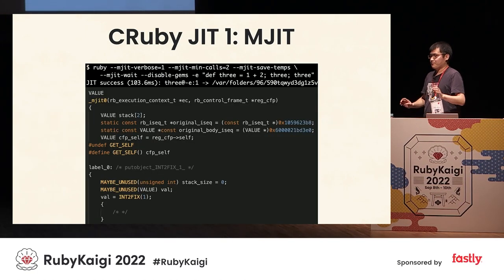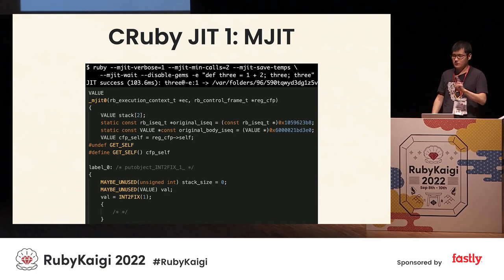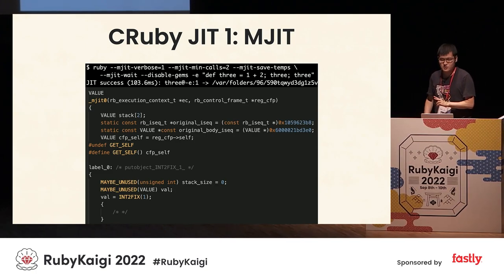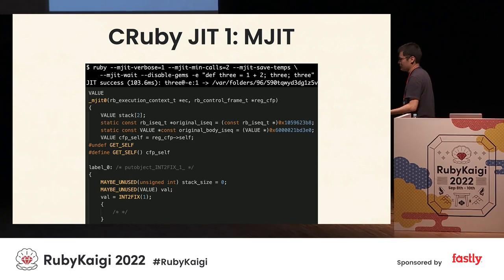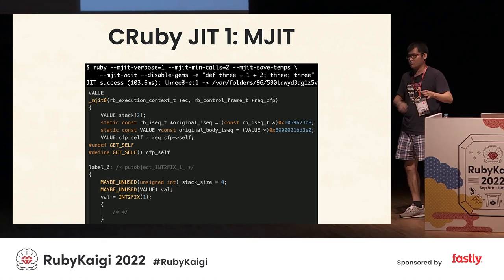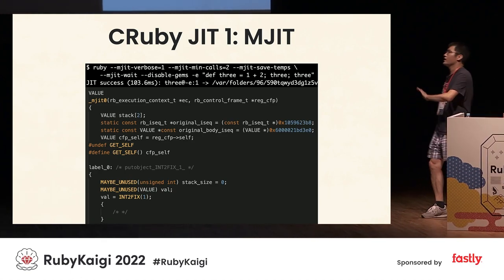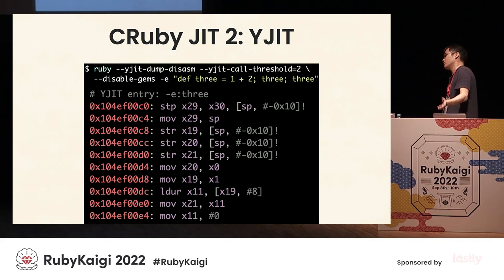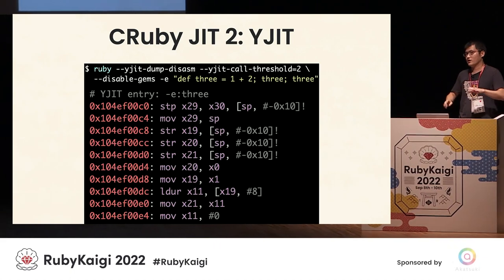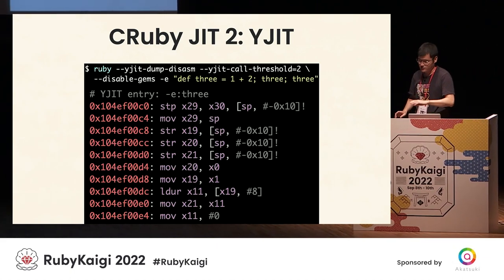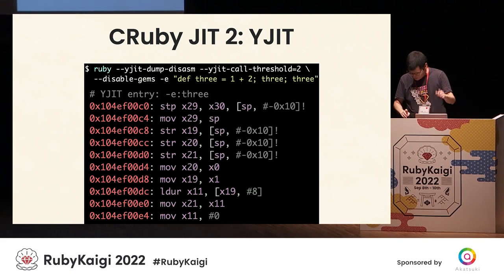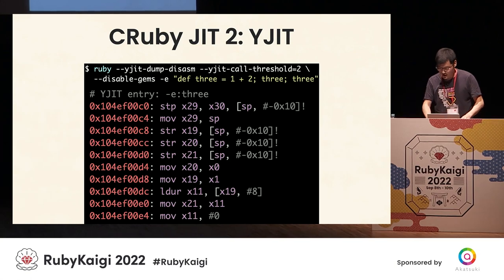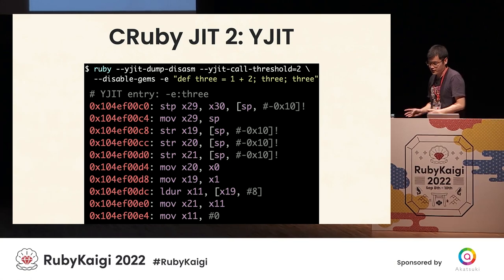CRuby currently has two different JIT compilers. The first one is MJIT, which was merged into Ruby 2.6 first. And then we also have the other JIT compiler called YJIT — you may have listened to the YJIT talk today. So those are the two different JIT compilers.